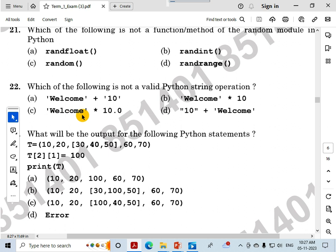Option C is wrong because it's string 'welcome' * decimal number 10.0. Along with the star operator, only integers are allowed. Since 10.0 is written here, C is an error.